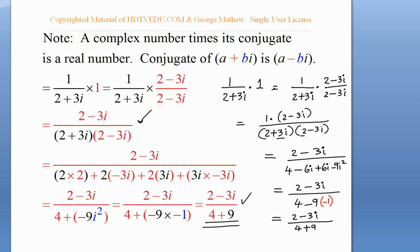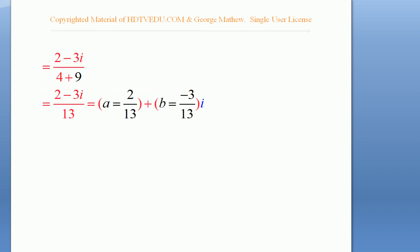4 plus 9 is 13. So, it is 2 minus 3i over 13, which is as good as 2 over 13 minus 3 over 13i. Remember, we want it in the form a plus bi.